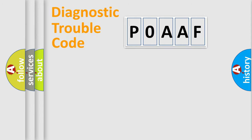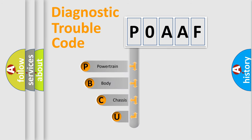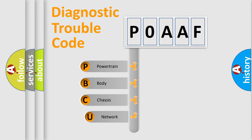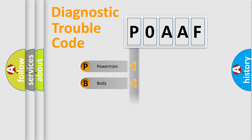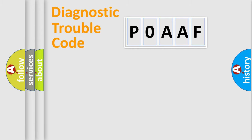First, let's look at the history of diagnostic fault code composition according to the OBD2 protocol, which is unified for all automakers since 2000. We divide the electric system of an automobile into four basic units: Powertrain, Body, Chassis, and Network. This distribution is defined in the first character of the code.